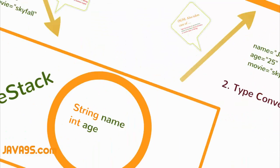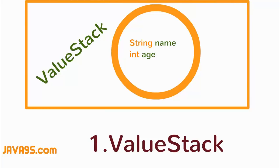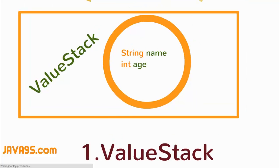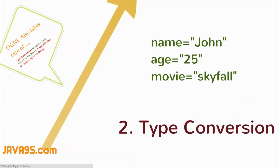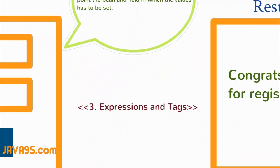To discuss the complete OGNL concept, I have divided it into three areas: first is the value stack, second is the type conversion part, and finally we also need to talk about expressions and tags — that is, form tags, UI tags, etc. In this part I will concentrate on the value stack.